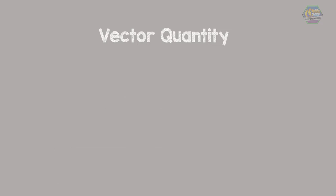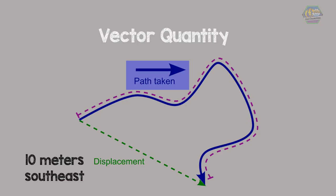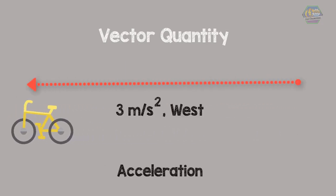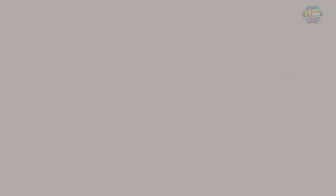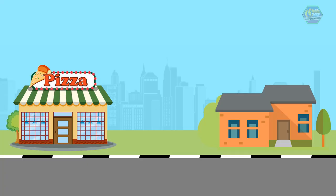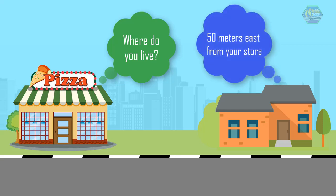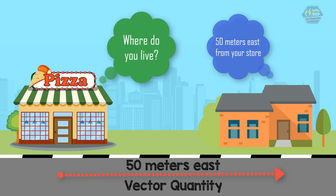For example, imagine yourself calling for a pizza delivery, then the pizza owner asks you where do you live. Then you reply, '50 meters east from your store.' The 50 meters east is a vector quantity because both quantity and direction are present. But when you reply to the pizza owner